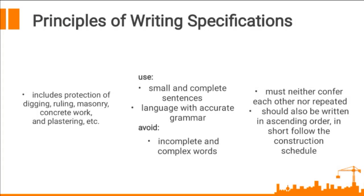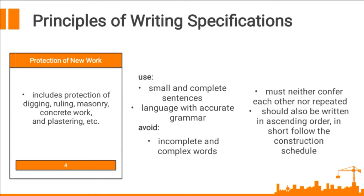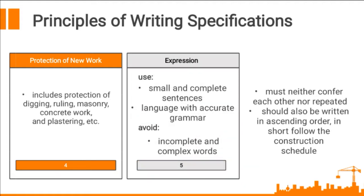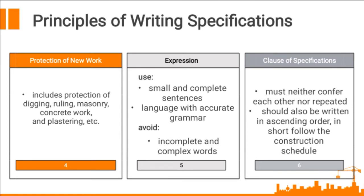Number four is protection of new work. It includes protection of digging — means to dig or break up and move earth with a tool or machine — ruling, masonry, concrete work, and plastering — means to cover a wall or ceiling with plaster, etc. Number five is the expression: use small and complete sentences, language with accurate grammar in order to understand it well, and avoid incomplete and complex words. Number six is the clause of specifications: must neither contradict each other nor be repeated, and should also be written in ascending order — in short, follow the construction schedule. For example, clauses related to excavation should come before foundation or footing.